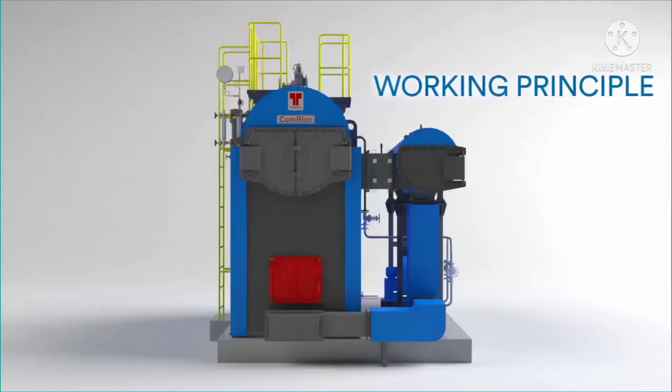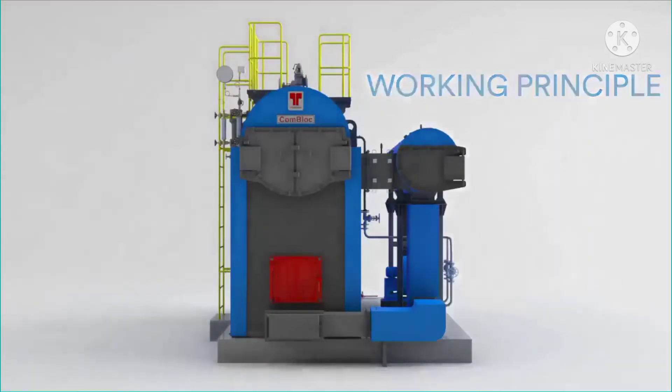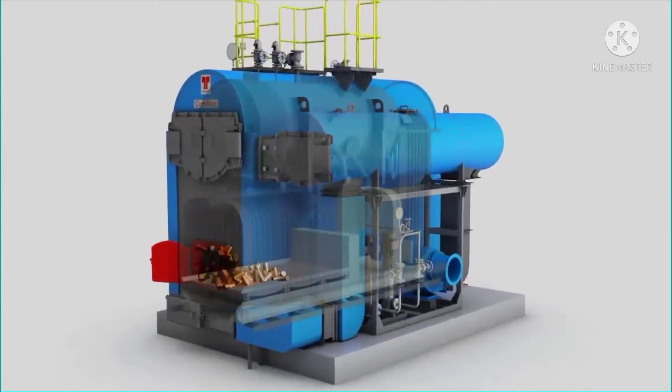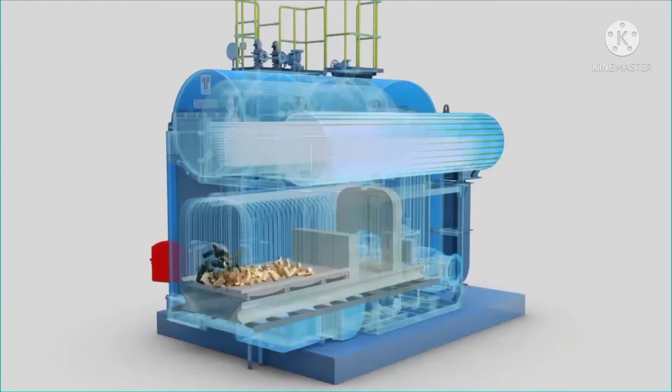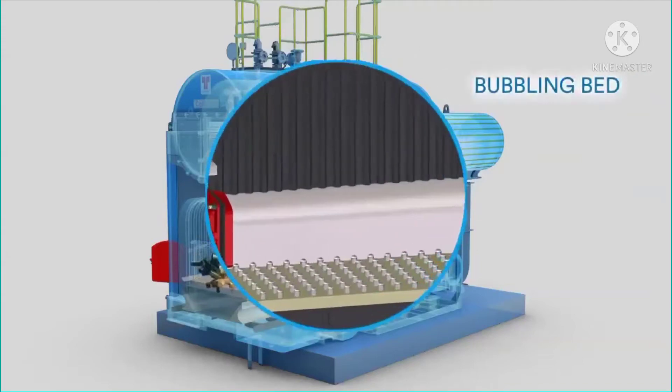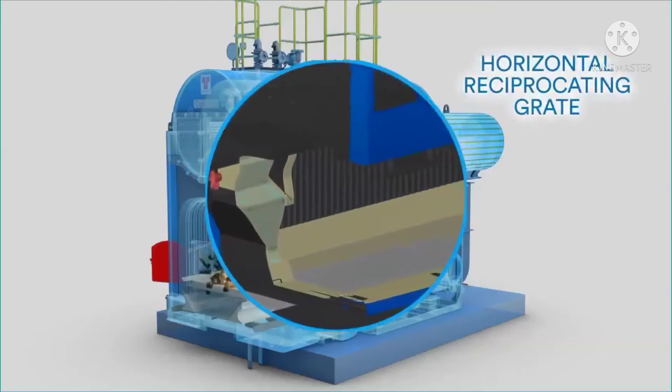Working Principle: Firstly, the fuel enters the combustion chamber on any of the four combustors, viz. stationary grate, chain grate, bubbling bed, or horizontal reciprocating grate.